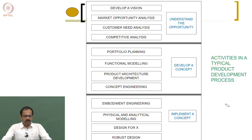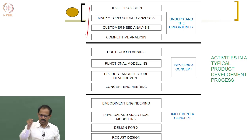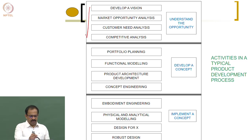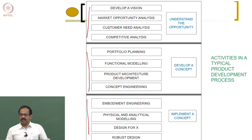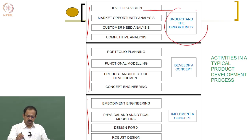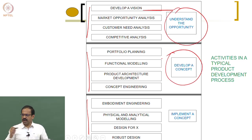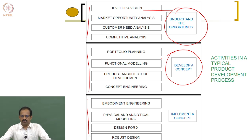To summarize: develop a vision and market opportunity analysis form the 'understand the opportunity' stage; the next forms 'develop a concept'; and the last forms 'implementing a concept.' These are the three important stages in designing a new product, and we will be looking at the first two stages — 'understand the opportunity' and 'develop a concept' — in detail.